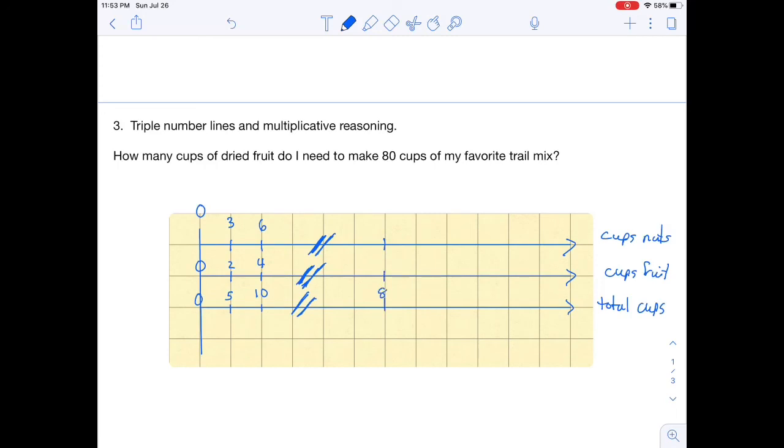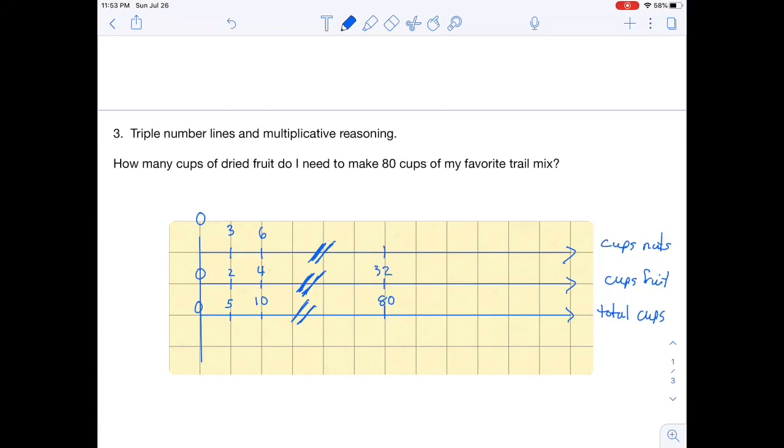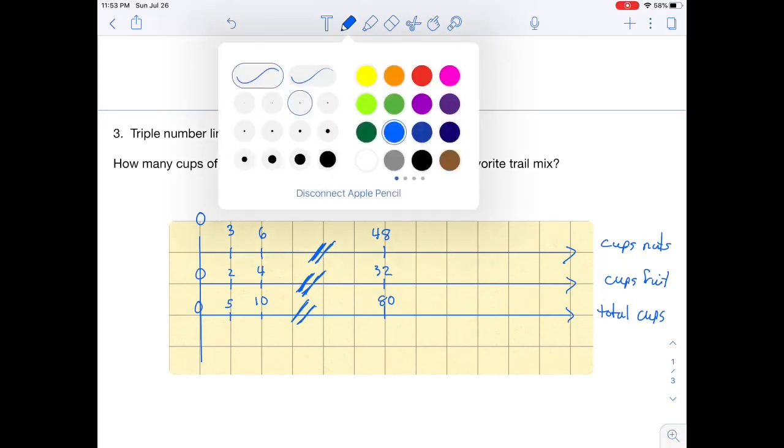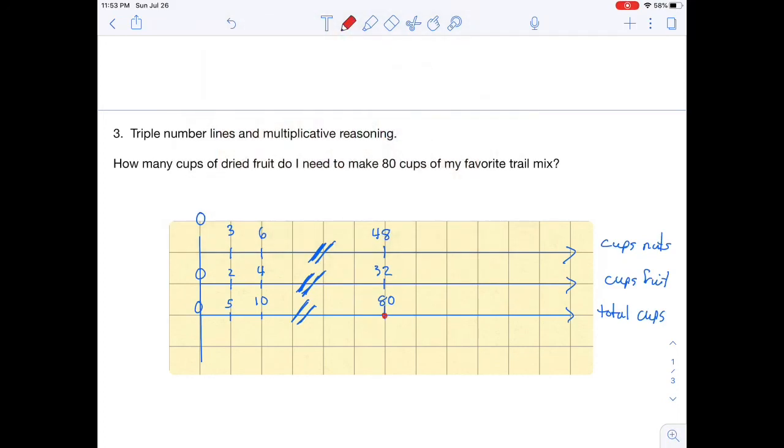I'll fill in my 80, having scaled up by multiplying by 8. 10 times 8 is 80, and I can multiply 4 times 8 and multiply 6 times 8 as well. Then as I look at my number line, I need 80 cups of trail mix, and so that means I need 32 cups of dried fruit. To show my work here, I will draw a labeled arrow that shows that I went from 10 to 80 and that I multiplied by 8, just like I did in my table.